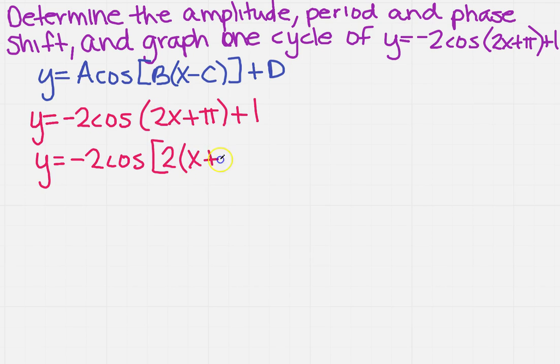That's going to leave me with x plus. Now, what do I need to multiply the 2 by to get pi? Well, I'm going to have to multiply by pi over 2, close bracket, plus 1. So now it's in exactly the same form.